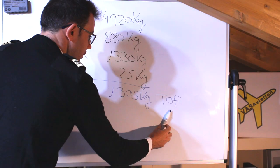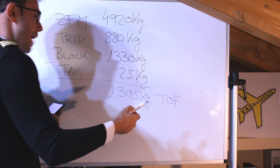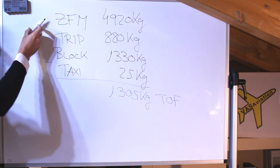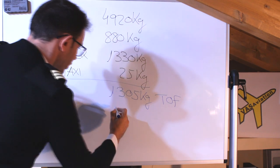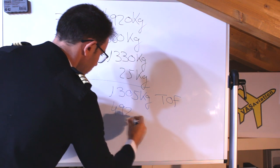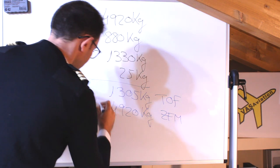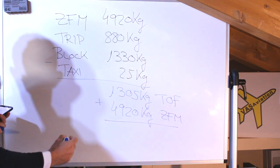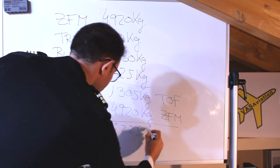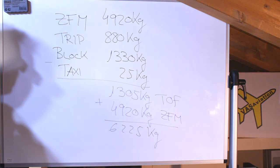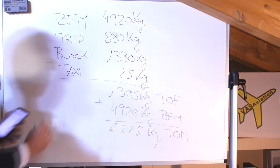Now that we have the takeoff fuel, the takeoff mass is zero fuel mass plus takeoff fuel: 4,920 plus 1,305 equals 6,225 kilos. That is the takeoff mass and the answer to the question.